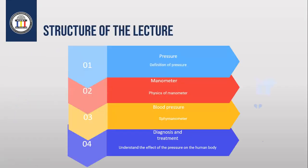Our structure is divided into four parts. The first part is about the definition of pressure. Then we will cover the manometer — the physics behind it. Then we will talk about blood pressure, which is the sphygmomanometer, the device used to measure systolic and diastolic pressure. And then we will end with diagnosis and treatment — understanding how pressure affects the human body.